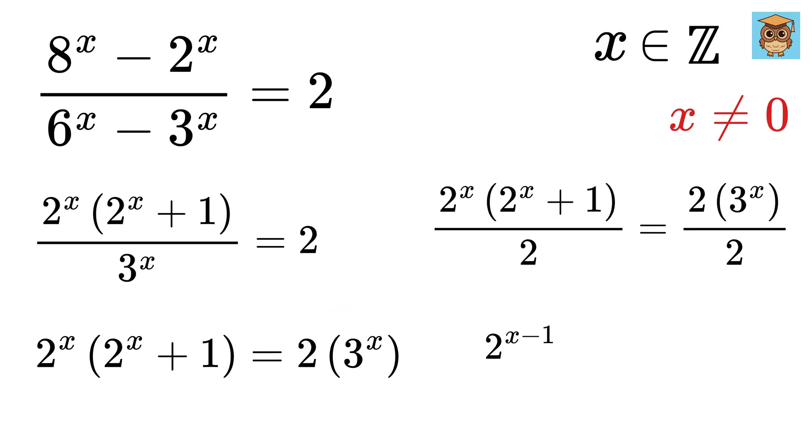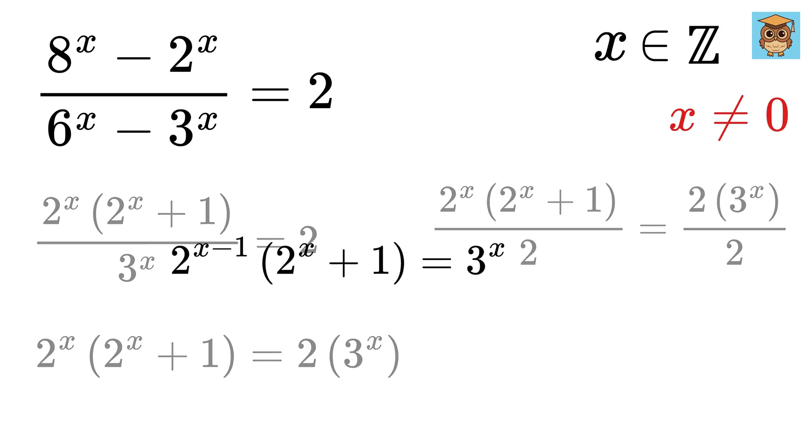So it will become 2 to the power of x minus 1 times 2 to the power of x plus 1 equals 3 to the power of x. Nice!